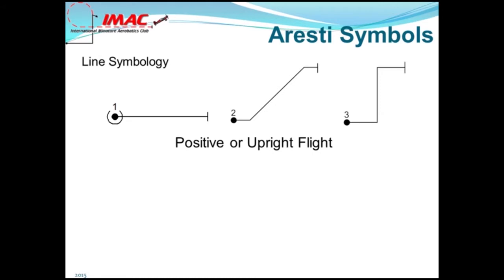Positive or upright flight is indicated by a solid line. Figure one, shown here, would be a horizontal line flown upright. Figure two begins wings-level horizontal flight, pulls to a 45 upline, and ends wings-level horizontal flight. Figure three begins wings-level horizontal flight, pulls to a vertical upline, and then would push to wings-level horizontal flight.